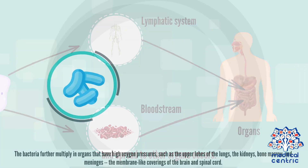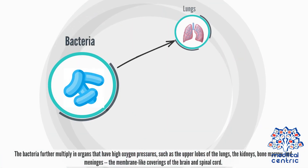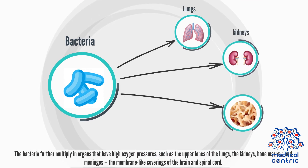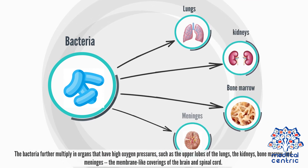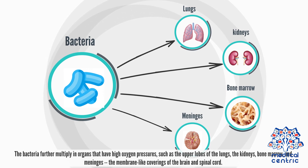The bacteria further multiply in organs that have high oxygen pressures, such as the upper lobes of the lungs, the kidneys, bone marrow, and meninges — the membrane-like coverings of the brain and spinal cord.